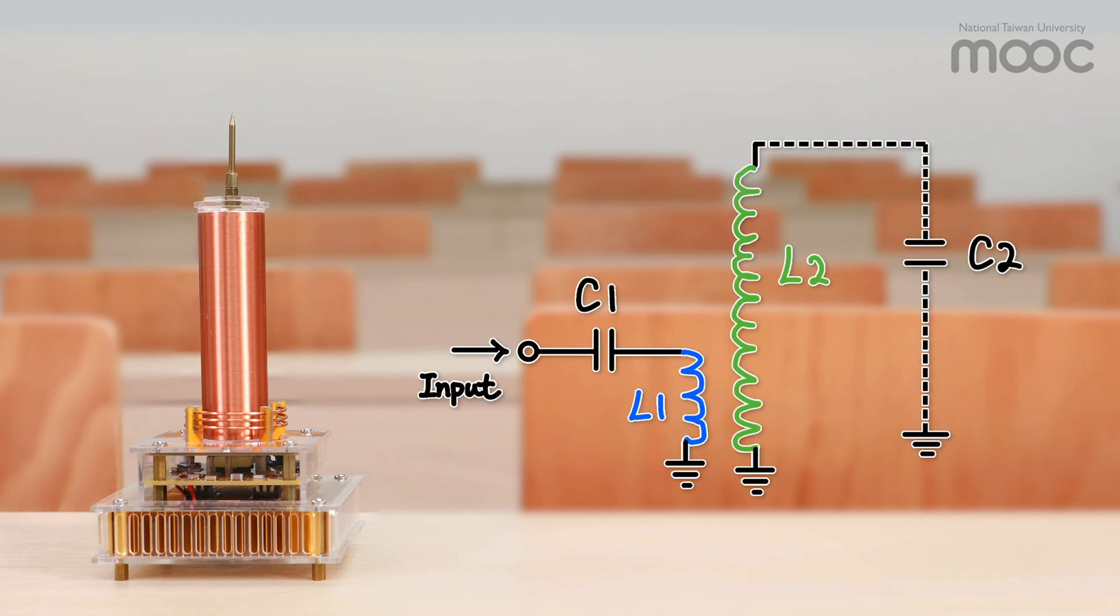The basic theory behind the Tesla coil is a pair of resonant circuits. The primary winding and the secondary winding work as a transformer that will convert a low input voltage to a high output voltage.